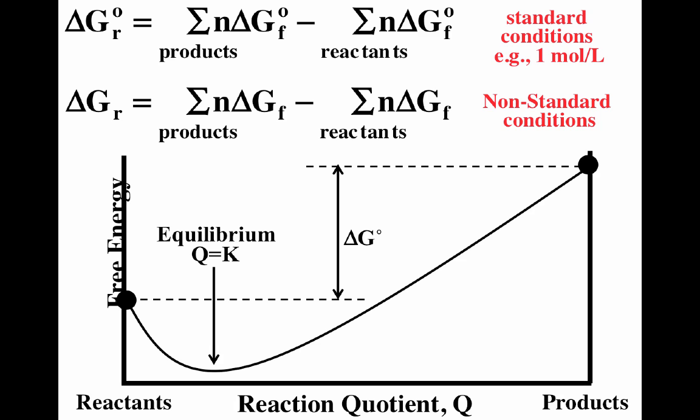I really like this graph on the bottom — it shows free energy plotted as a function of the reaction quotient. Delta G-naught is the difference in having pure products versus having pure reactants. The delta G-naught, with the superscript zero, corresponds to standard conditions. Delta G is non-standard conditions, and delta G can be determined at any point. Delta G is actually the slope of that line.